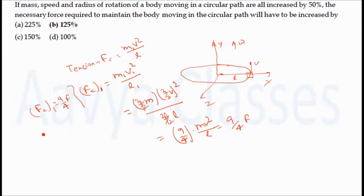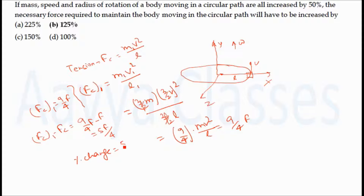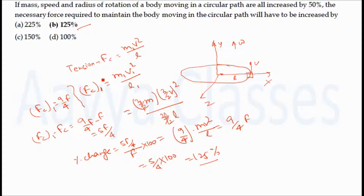We have to calculate the percentage change in force. Change in force = (9/4)F - F = (5/4)F. Percentage change = (5F/4) / F × 100 = (5/4) × 100 = 125%. So the necessary force required to maintain the body moving in a circular path will have to be increased by 125%. All these problems are not that tough; you just need to understand the basic concept inside the problem.